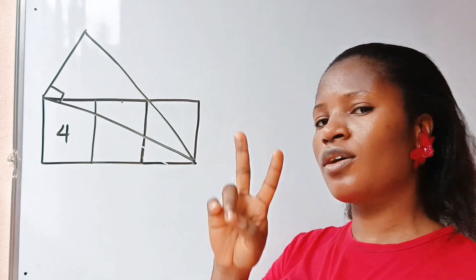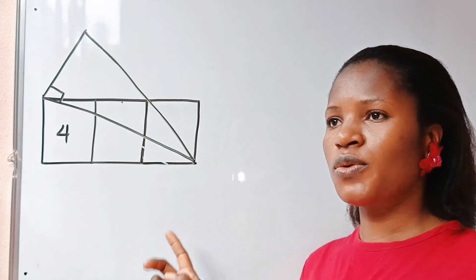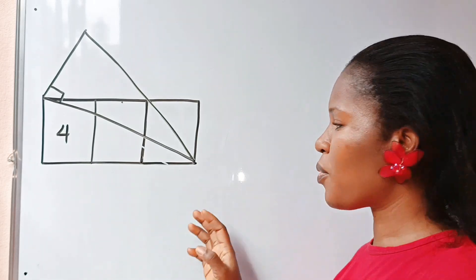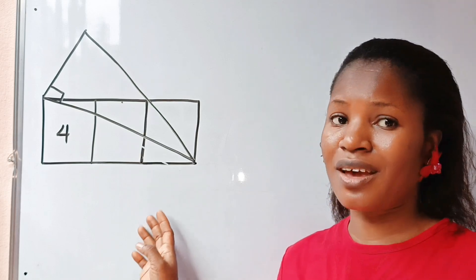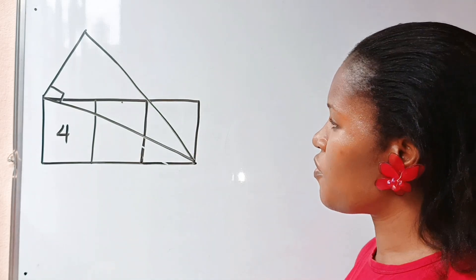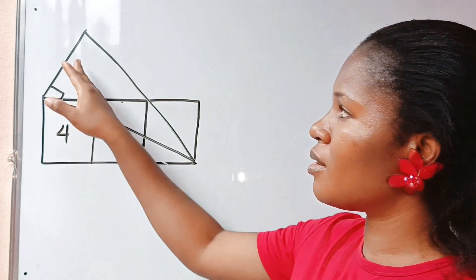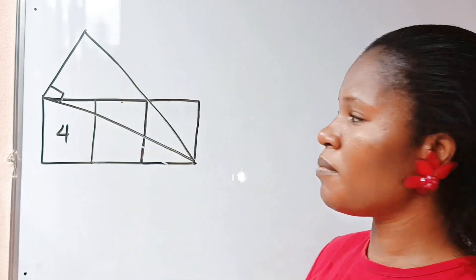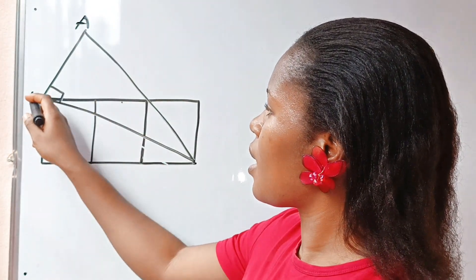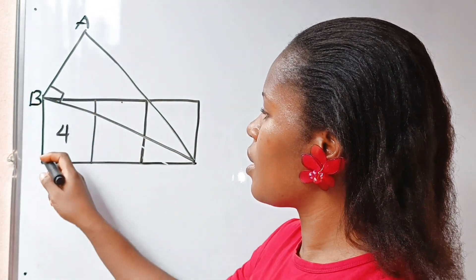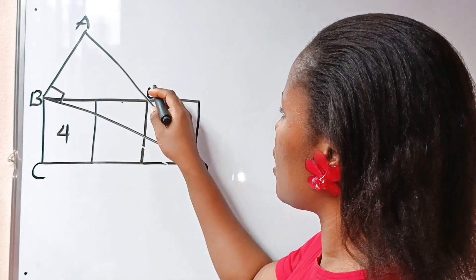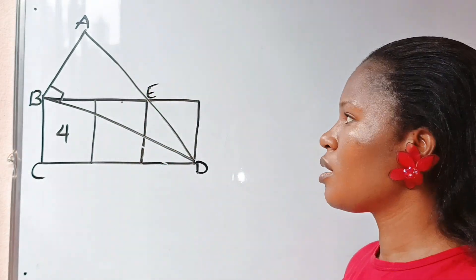Now, this is the second method. I've solved this using a different method, and I promised you guys I'm going to solve it again using a different method. Now first, let's name this. Let's call this A, B, C, D, and E.